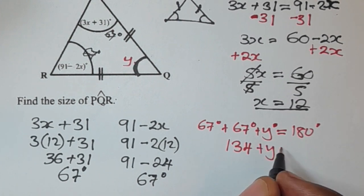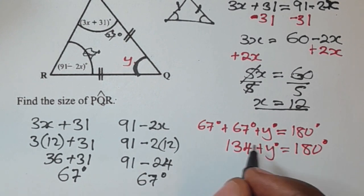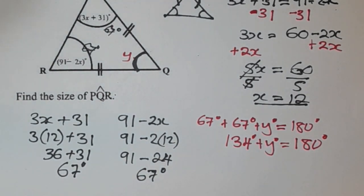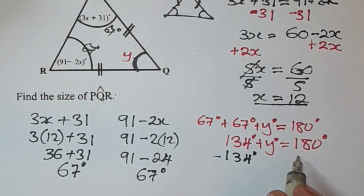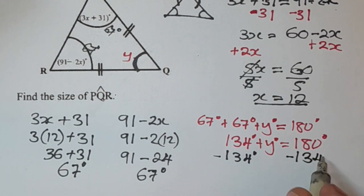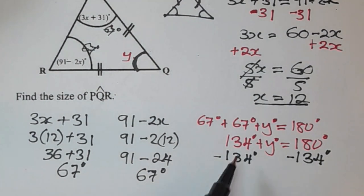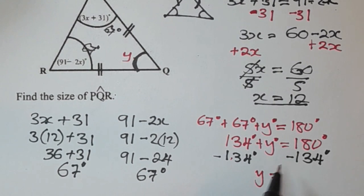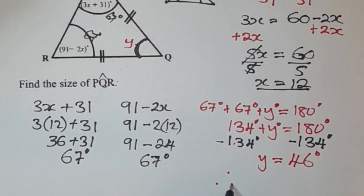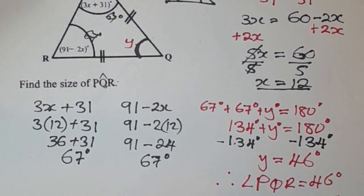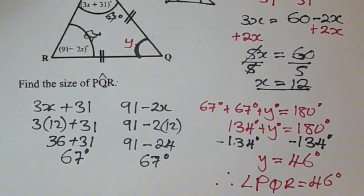67 plus 67 is 134, so 134 plus y equals 180 degrees. We subtract 134 from both sides, giving y equals 180 minus 134, which is 46 degrees. Therefore, angle PQR equals 46 degrees. Thank you very much for watching — if you are new to this channel, consider subscribing.